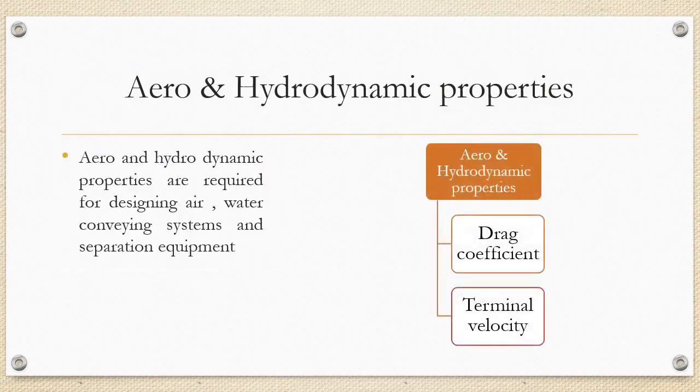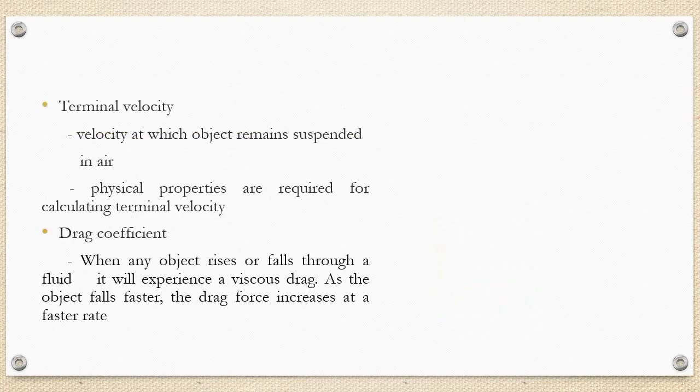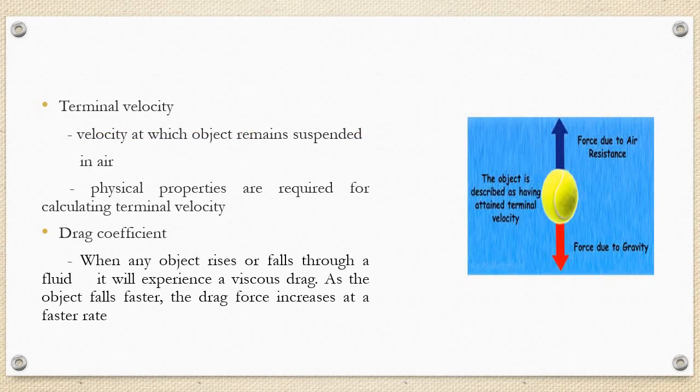Aero and hydrodynamic properties such as drag coefficient and terminal velocity are required for designing air and water conveying systems and also in separation equipment. Terminal velocity is the velocity at which an object remains suspended in air. Physical properties such as size and shape and density are required for calculating terminal velocity. Drag coefficient happens when any object rises or falls through a fluid, it will experience a viscous drag. As the object falls faster, the drag forces increase at a faster rate.